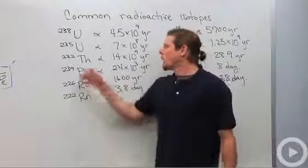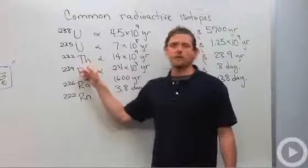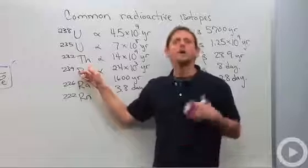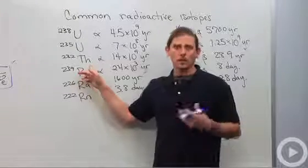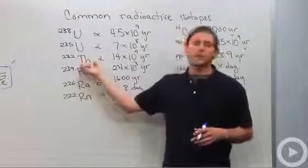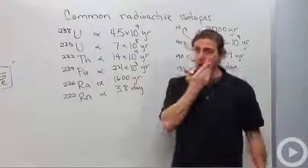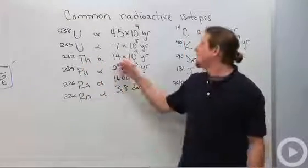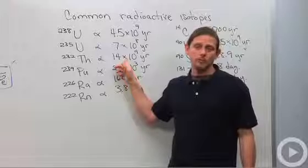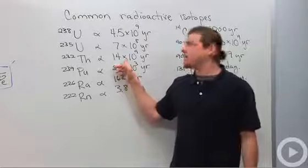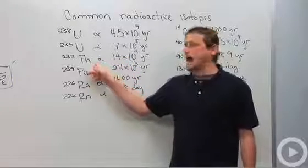Thorium-232 is another very very very commonly found radioactive isotope on the earth. This consists of the majority of naturally occurring thorium on the earth because the half-life of thorium-232 is about 14 billion years. He also decays by alpha emission.